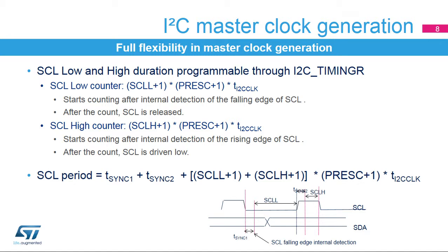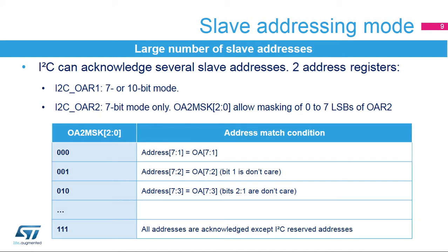The rising edge depends on pull-up resistor and SCL line capacitance. The falling edge depends on the I/O port parameters defined in the datasheet. In order to properly configure clock speed, these edges can be either measured or calculated. They are needed to properly configure the I2C peripheral in the STM32CubeMX tool. Then, the settings of the timing register can be automatically calculated by this tool.